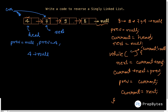We loop again — current is not null. We do next equal to current's next, so next now points to 9 — this link gets stored. We then do current's next equal to prev: since prev is 4, next of 7 becomes 4. Then we update prev to current, so prev becomes 7, and current becomes 9.